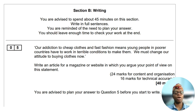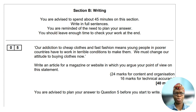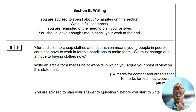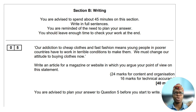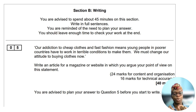Question five is a big one in this paper. It's in section B and it's an extended writing task. I recommend spending 45 minutes. Unlike paper one where you can choose between two writing tasks, you only have one option here. There are 40 marks at stake: 24 marks are for content and organization, whereas 16 marks are for technical accuracy — that's SPAG: spelling, punctuation, and grammar. Please make sure you are using a range of ambitious vocabulary and sentence structures with accurate spelling and punctuation.